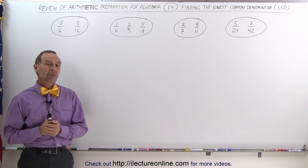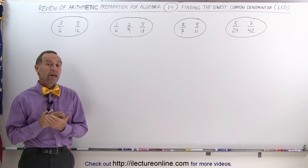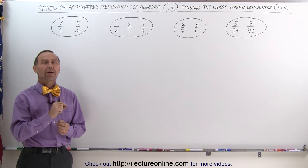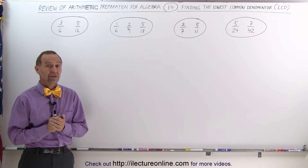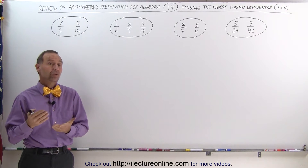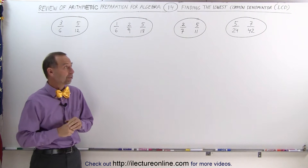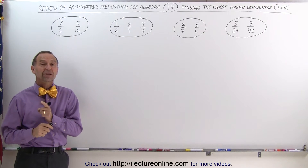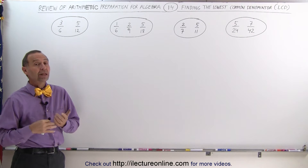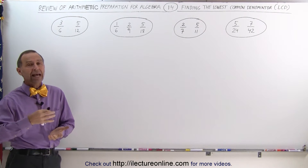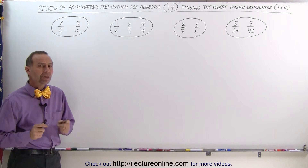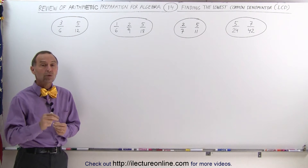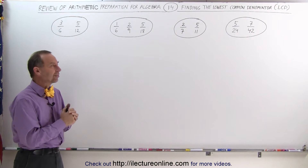Welcome to ElectronLine. Before we learn how to add and subtract fractions, we need to know how to find the lowest common denominator, because that's the technique to learn how to add or subtract fractions from one another, especially when the denominators are not the same. When the denominators are the same, it is really easy to add and subtract fractions. But when they're not the same, we need to find what we call the lowest common denominator — the LCD.